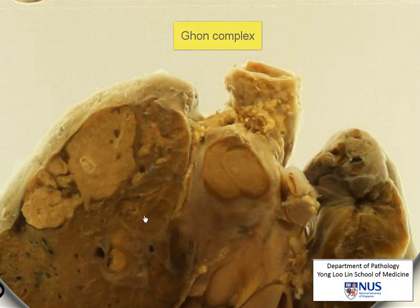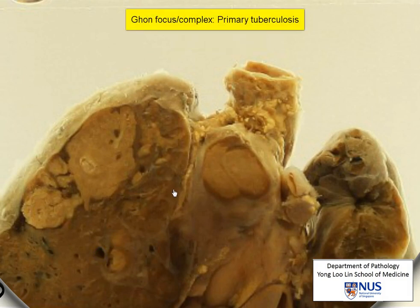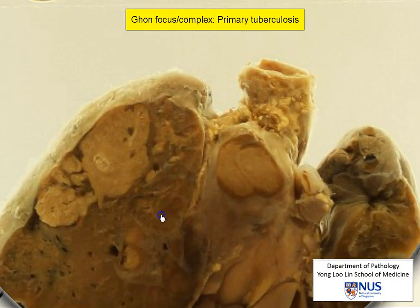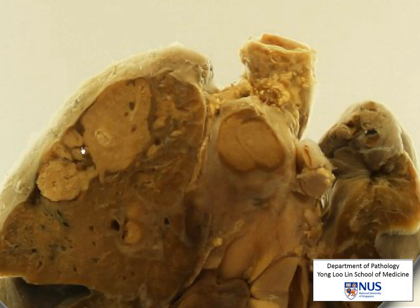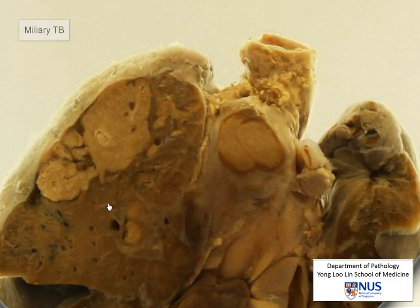In primary TB, the route of infection is by inhalation. What can actually happen is that either this GON focus can heal and there can be a little small residual fibrous scar, or it can spread. When it spreads, it can spread to other parts of the lung. It can spread into the airways, giving rise to dissemination within the lungs, or it can even spread into small blood vessels, giving rise to widespread systemic dissemination.